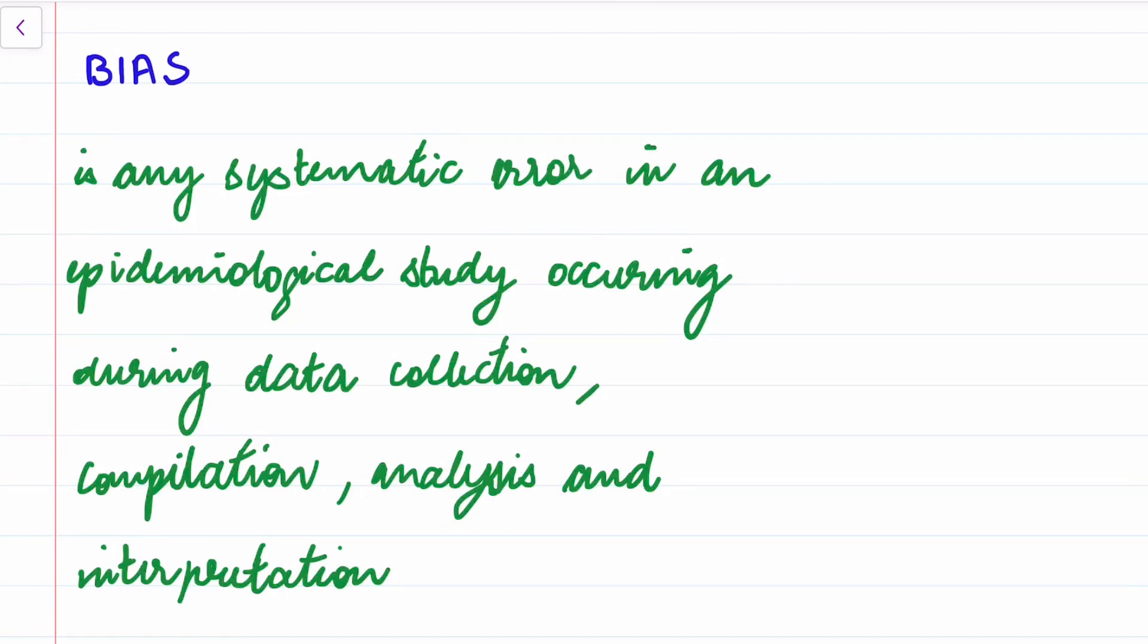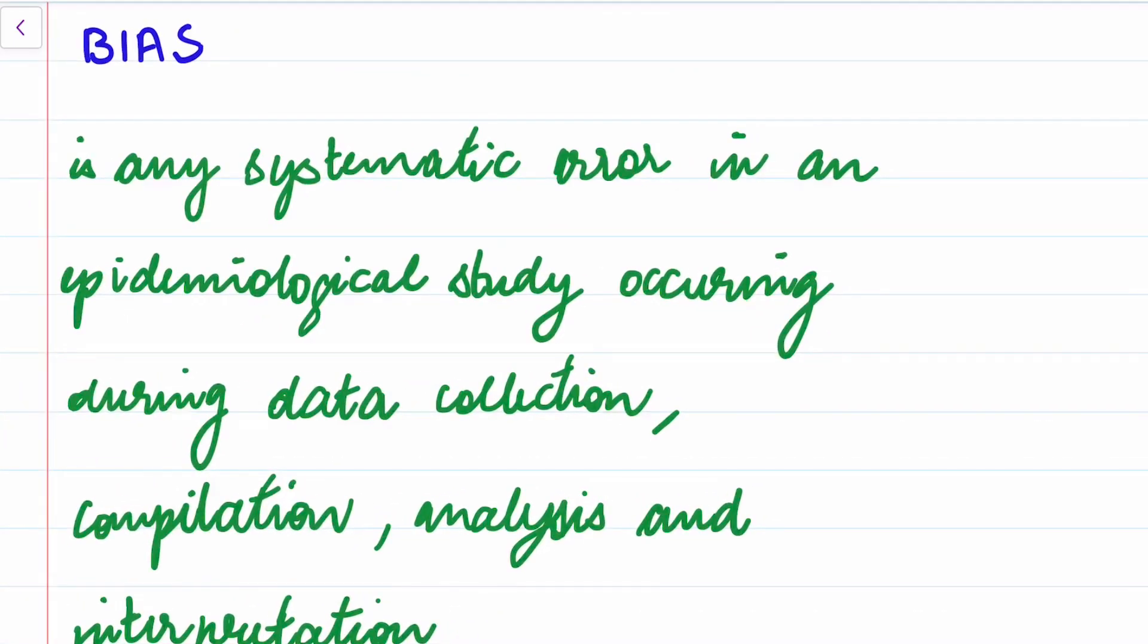Now in this video I will be discussing about bias and I will be giving you examples. So what is bias? Bias is any systematic error in an epidemiological study which produces results that are consistently distorted in one direction due to non-random factors.